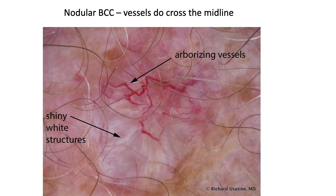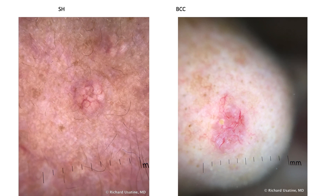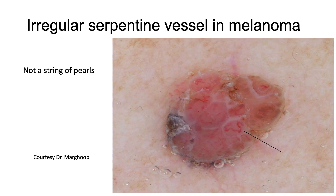Now nodular BCC has vessels, but they do cross the midline — these arborizing vessels cross the midline. For sebaceous hyperplasia, the question is: which is sebaceous hyperplasia and which is BCC? BCC vessels cross the midline; sebaceous hyperplasia vessels do not. Here's another example — the BCC has vessels that cross the midline, while these vessels really are on the periphery and come to the middle but shouldn't cross over.